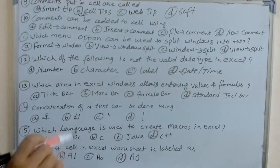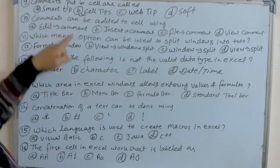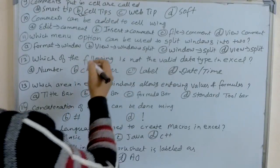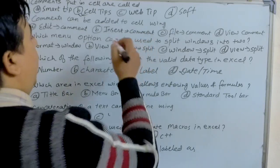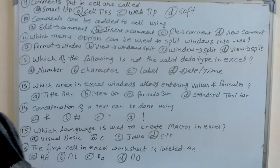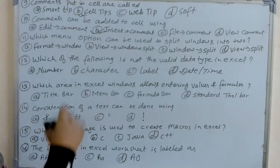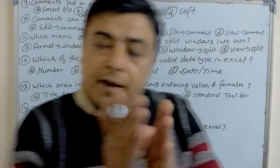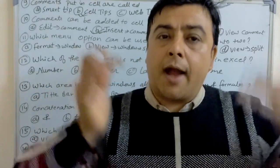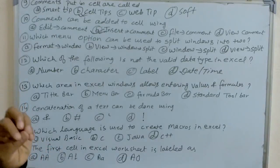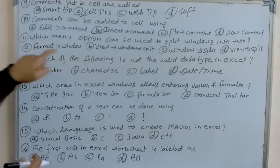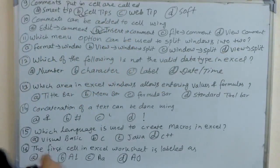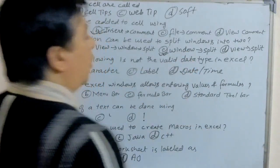If you mouse over that red corner, the cell tip shows the comment you have written. That's why comments put in a cell are called cell tips. Tenth question: comments can be added to a cell using which menu? To insert a comment, we have to click Insert and then Comment. Next question: which menu option can be used to split windows into two? To split the window into two parts, we click Window then Split, or View then Split.